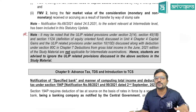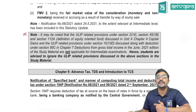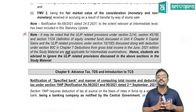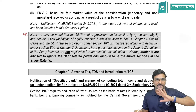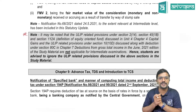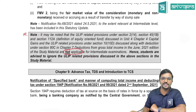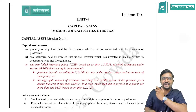It may be noted that ULIP-related provisions under Section 2(14) — which talks about the definition of capital asset — Section 45(1B) which is the charging section for capital gains, Section 112A which talks about tax rate for special assets, and ULIP-related provisions under Section 10(10D) which talks about exemptions discussed along with deduction under Section 80C — are not applicable for the intermediate examination. Students are advised to ignore the ULIP-related provisions discussed in these sections.